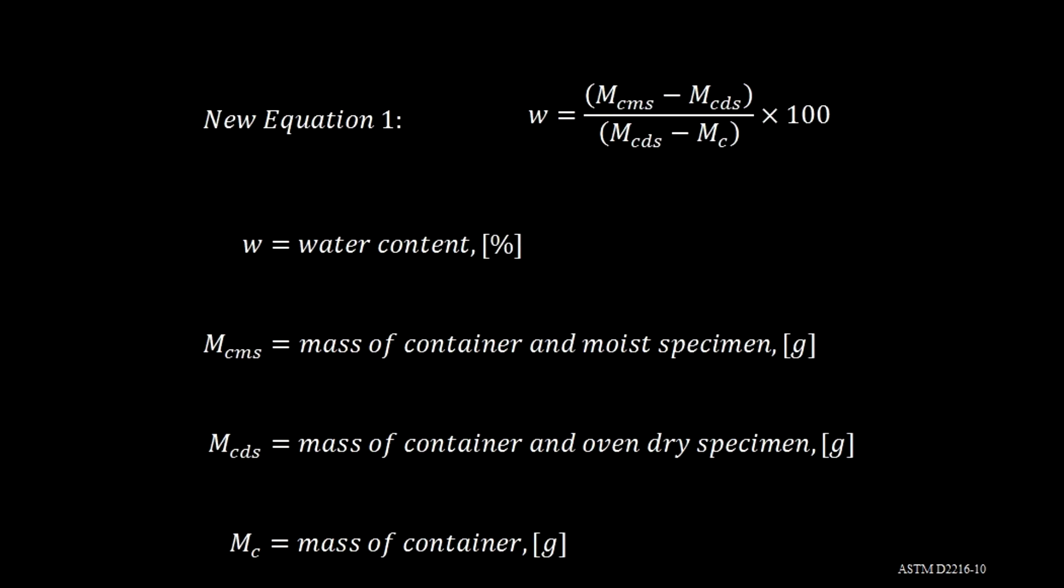Equation 1 can be manipulated into a new equation which will allow one to use the data collected. This is represented as the mass of the container and moist specimen minus the mass of the container and oven dry specimen, all over the mass of the container and oven dry specimen minus the mass of the container. Again multiplied times 100 and presented as a percentage.